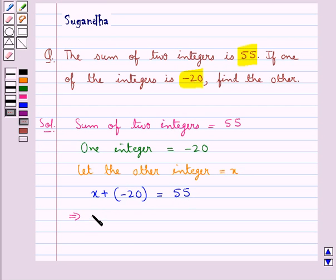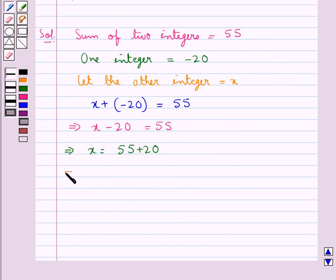Or x minus 20 is equal to 55, since plus minus is minus. And from here we have x is equal to 55 plus 20. So this gives us x is equal to 75.